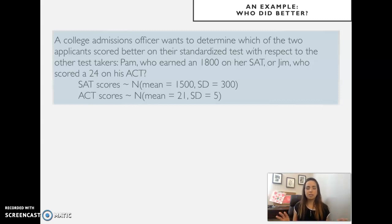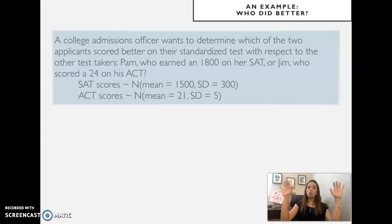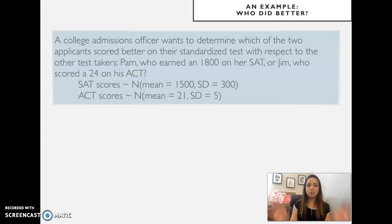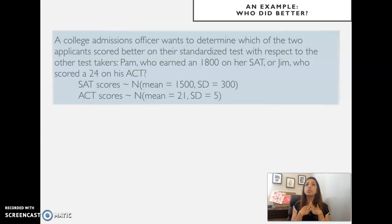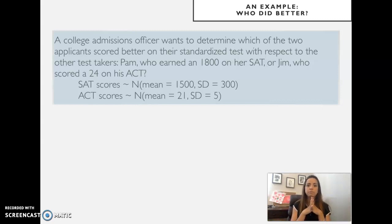Of course 1800 is larger than 24, but if they come from tests with different distributions, different means, and different standard deviations, those raw scores aren't comparable. Consider a distribution with a mean of 1500 — a score of 1510 is only 10 above the mean.